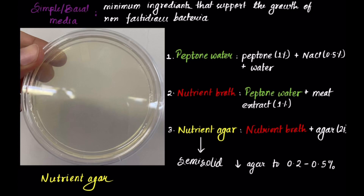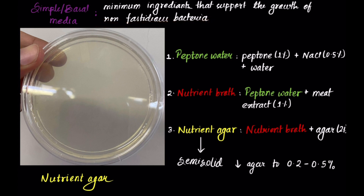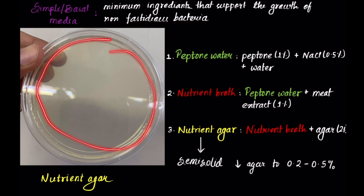Under culture media, the first type is simple or basal media. It is simple because it contains minimum ingredients, and it is required to culture non-fastidious bacteria. Non-fastidious bacteria are those that do not require special conditions or special nutrients to grow — they can be cultured in minimum nutrition. Basal media can be used for non-fastidious bacteria, and this right here is nutrient agar.